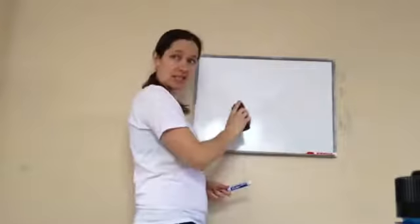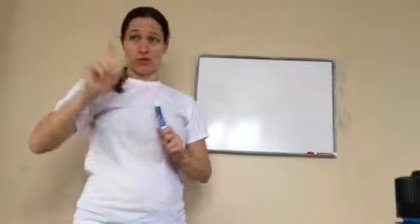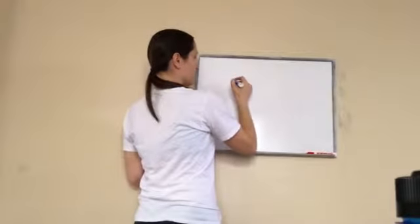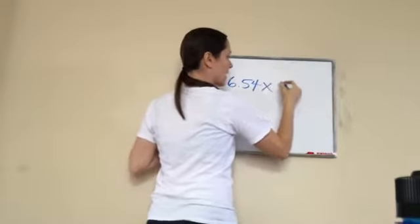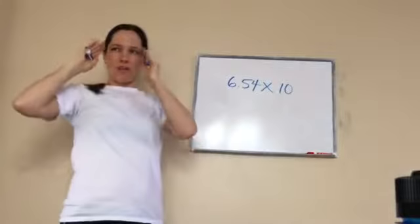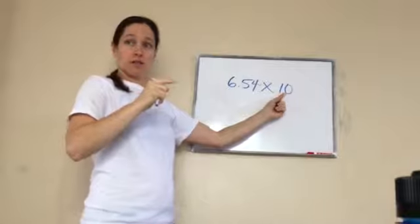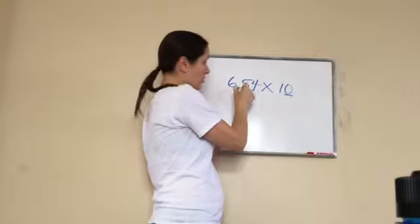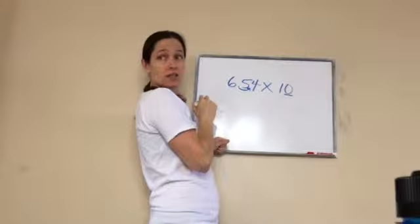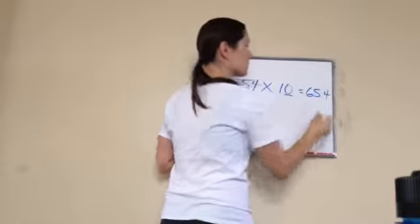Let's talk about mentally multiplying decimal numbers. If I did 6.54 times 10, do you remember how to do this mentally? Times 10? Because there's one zero, we can move the decimal one time to the right. The answer becomes 65.4.